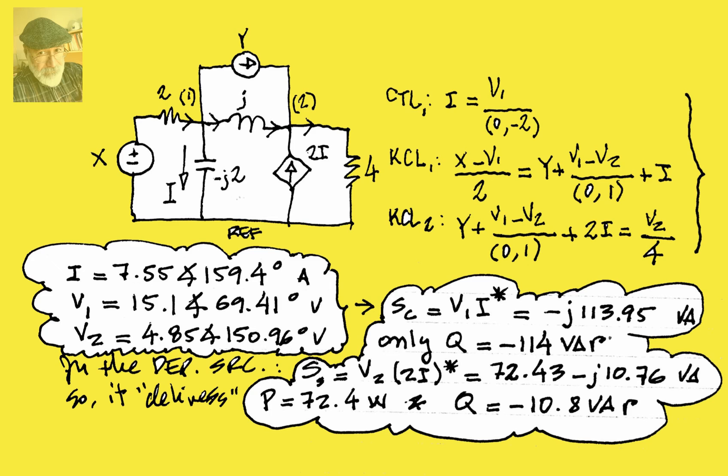What other was the question? Well, find also what is the power in this controlled source over here. Well, for that, we have the voltage across that source, which is v2. This one, v2, multiplying by the current 2i that we know. And we say that power is v2 multiplied by the conjugate of 2i. And that happens to be 72 negative j11 volt-ampere. The real part, the reactive part, negative 11 VAR. And that is the power delivered by this source.